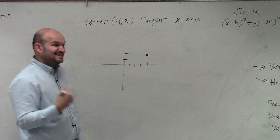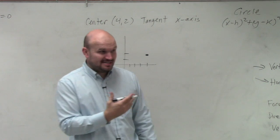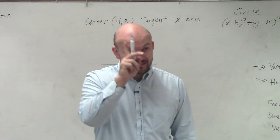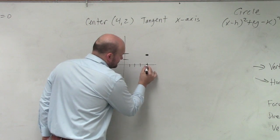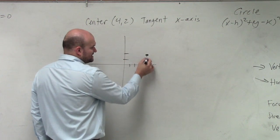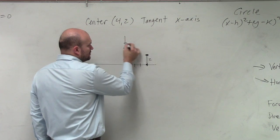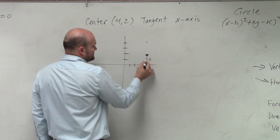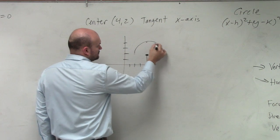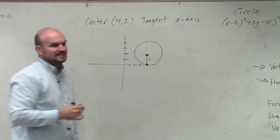Now this circle is tangent to the x-axis. That means it touches the x-axis at one point. So you can touch that at one point. So that means that distance there is 2. So I have some circle that looks something like that.